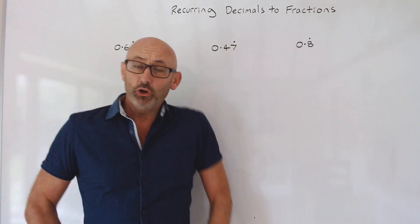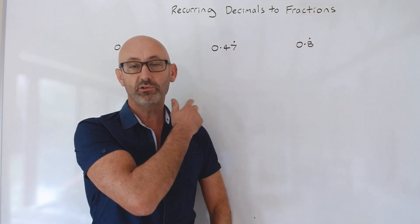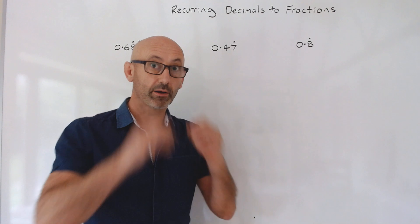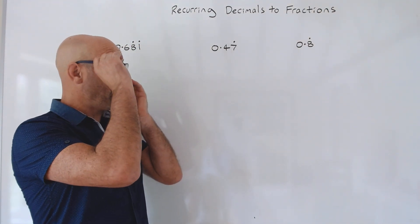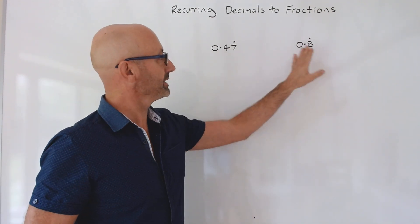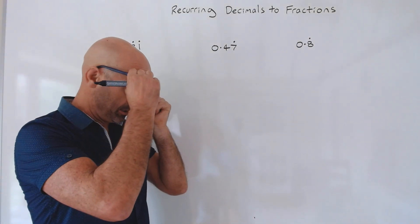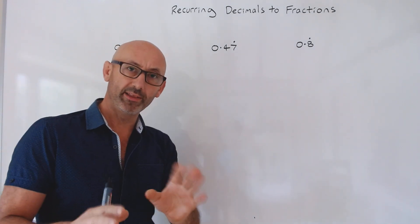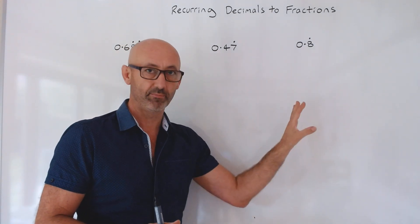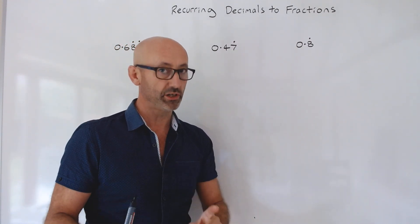Could you put the heading, please? Recurring decimals — so it's really converting recurring decimals to fractions. I've got three examples here, starting from the easiest going to one of the harder questions. There's also an exam question at the end which we'll get to after we've done these and practiced some. You'll see what I mean if you stay with me.